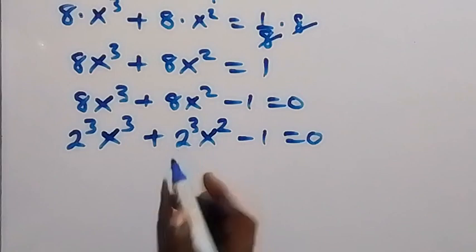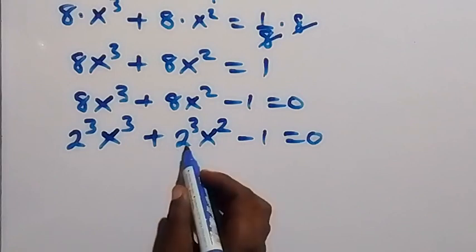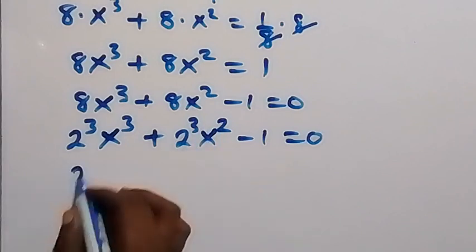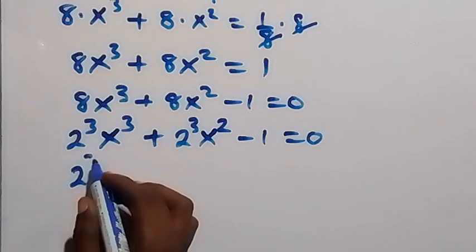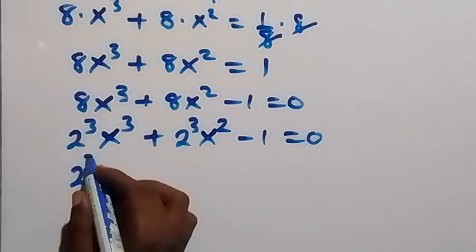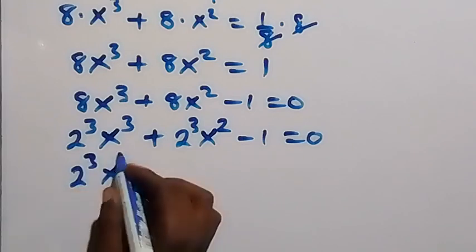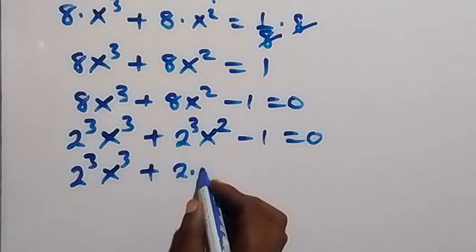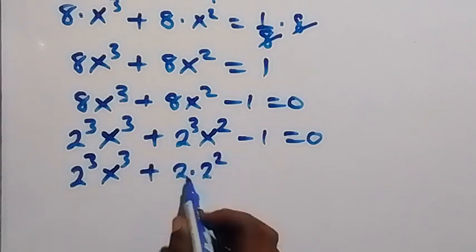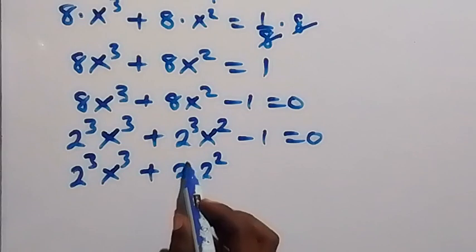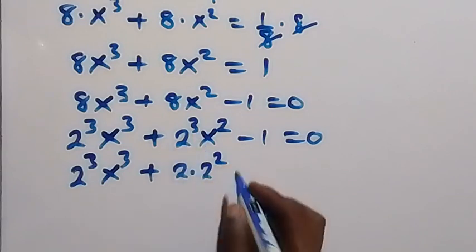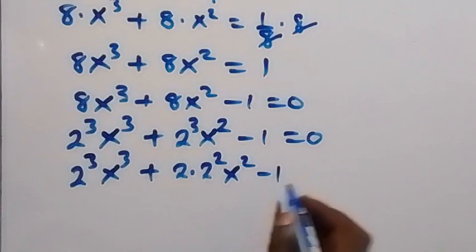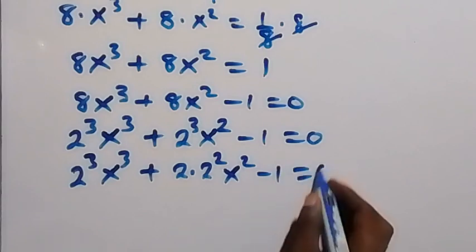From here we can remove one of the 2s, and this will become 2 raised to the power 3 times x raised to the power 3, plus 2 times 2 squared — which is 2 raised to the power 3 — then times x squared minus 1 equals to 0.